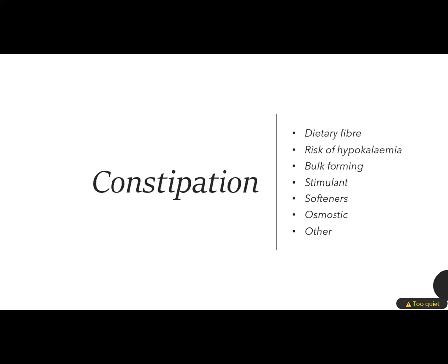Stimulant laxatives are some of the most powerful laxatives. Examples include bisacodyl, picosulfate, senna, dantron, and co-danthrusate. Co-danthrusate is not used anymore because of its carcinogenic effects, but it can still be used for terminally ill patients because of its effectiveness. They work by causing the stomach to move — stimulating motility — but can cause cramps and worsen obstructions. Docusate can act both as a stimulant and a softener, and glycerol can act as a lubricant and a stimulant.